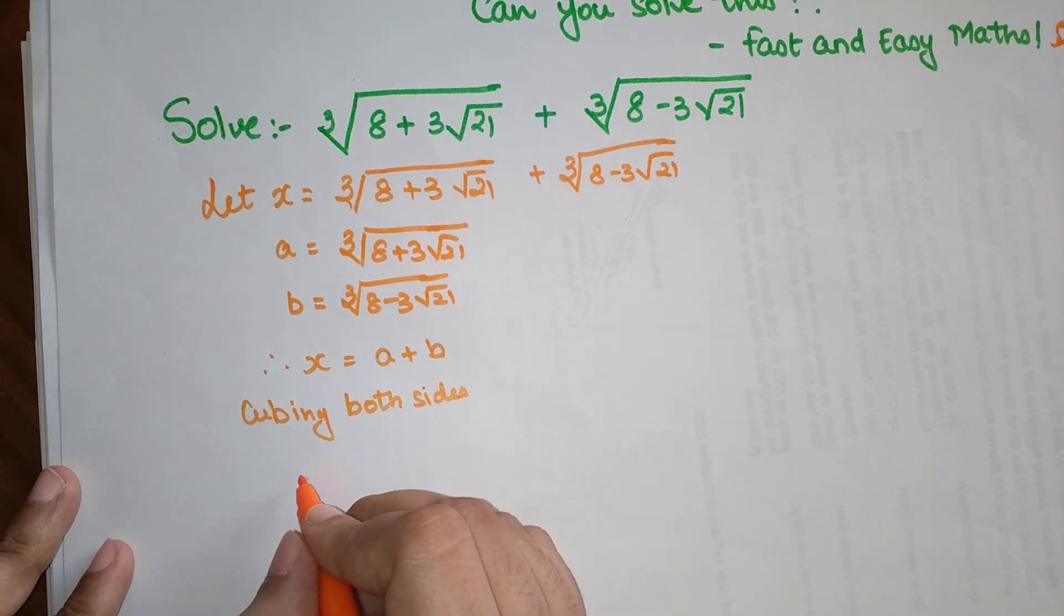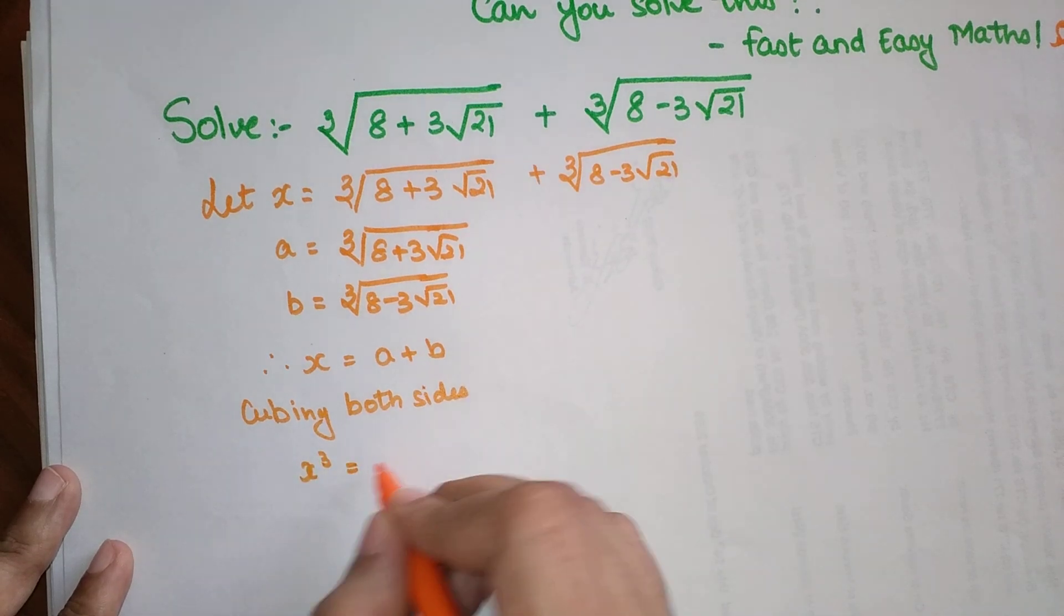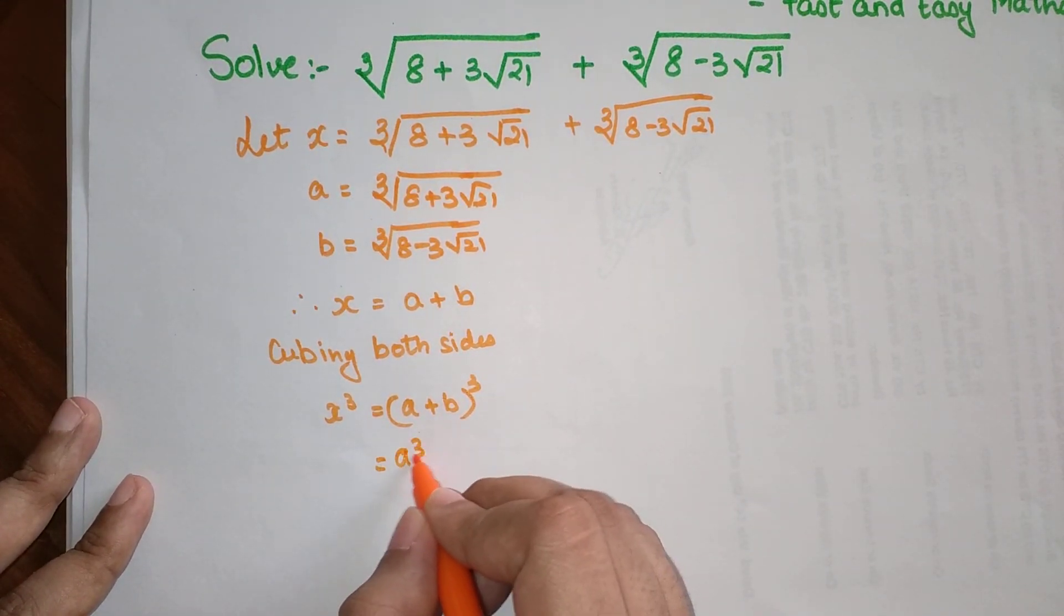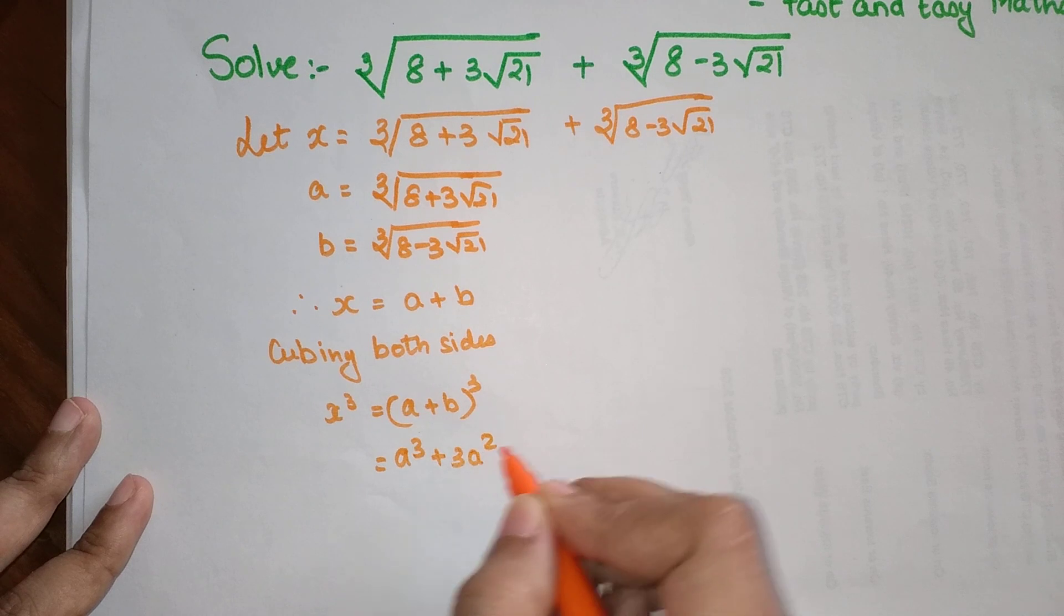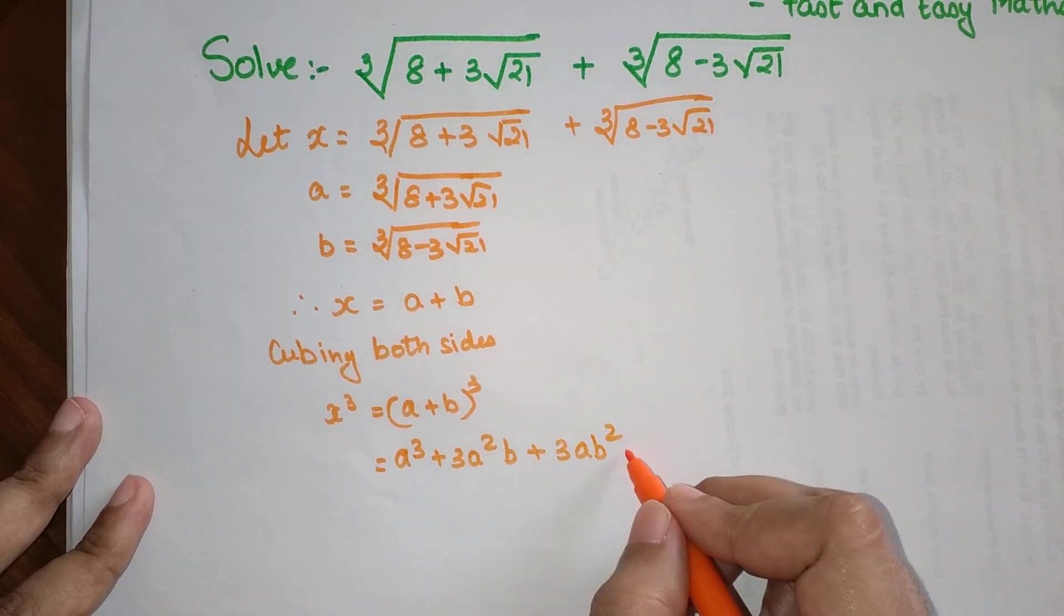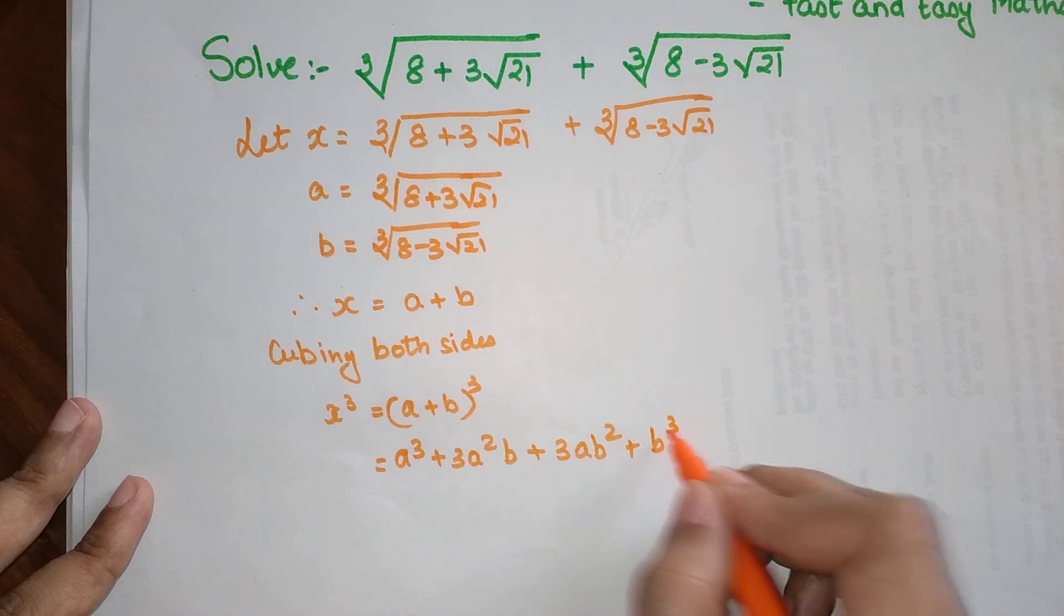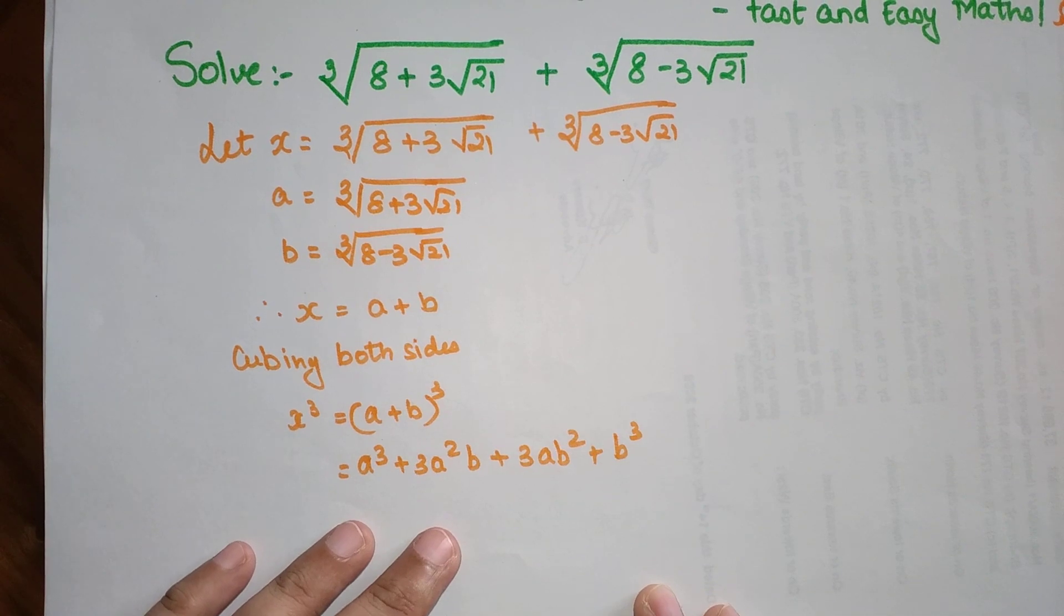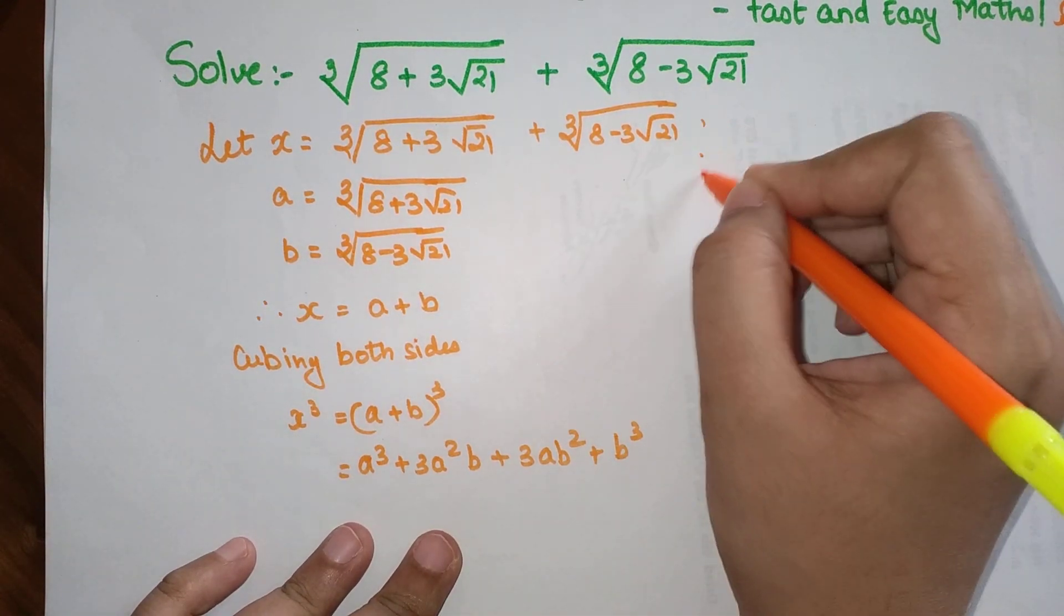When I do that I get x cube equals (a plus b) cubed. Let's expand this so I get a cube plus 3a squared b plus 3ab squared plus b cube. This is where I am coming to now.